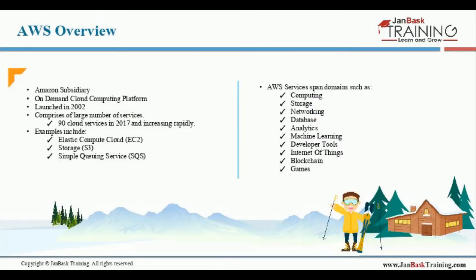What is AWS? It is an Amazon subsidiary that provides an on-demand cloud computing platform. It was launched in 2002 and comprised 90 cloud services in 2017, with this number continuing to grow.